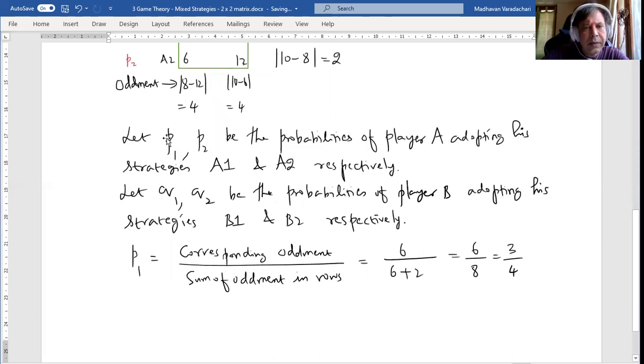Since P1 and P2 are the only two probabilities available for player A, we can say that P1 plus P2 is 1, which means P2 equal to 1 minus P1. So we can find out P2 as 1 minus 3 by 4, which is 1 by 4.